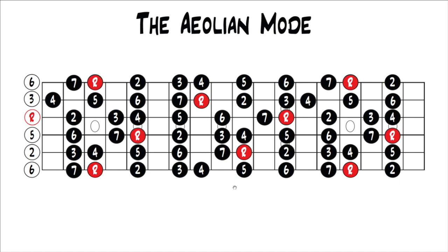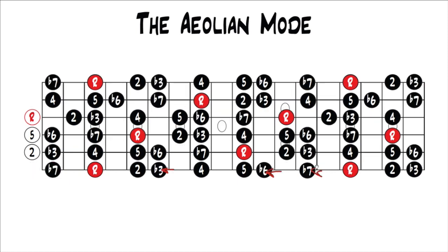If we look at the Aeolian mode compared to the major scale — because that's where all the flats come from — you would flat the 3 a half step, flat the 6 a half step, and flat the 7 a half step, and that gives you the Aeolian mode. But it's easier just to think about it from Dorian: if you know Dorian is root, 2, flat 3, 4, 5, 6, flat 7, all you have to think about is lowering the 6 half a step.